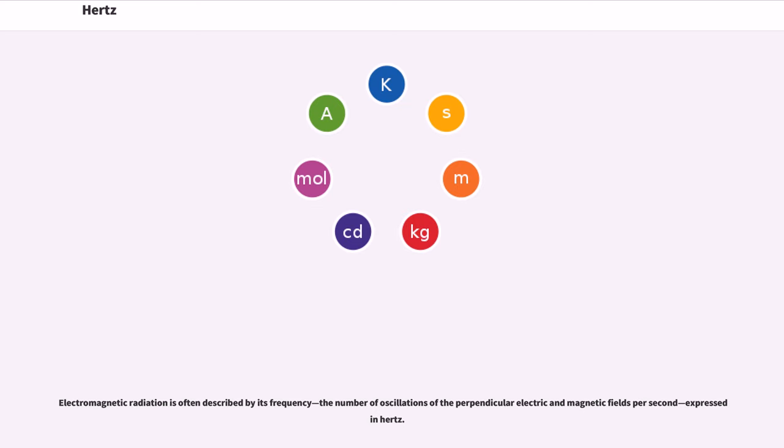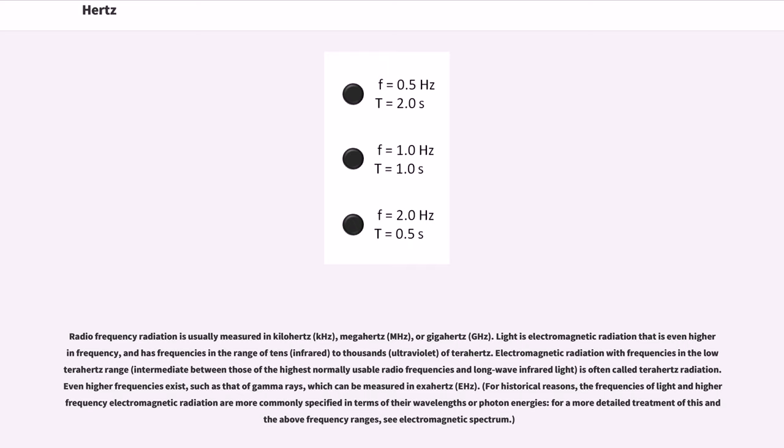Electromagnetic radiation is often described by its frequency, the number of oscillations of the perpendicular electric and magnetic fields per second, expressed in hertz. Radio frequency radiation is usually measured in kilohertz (kHz), megahertz (MHz), or gigahertz (GHz).